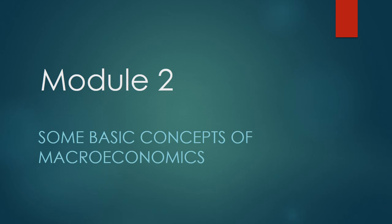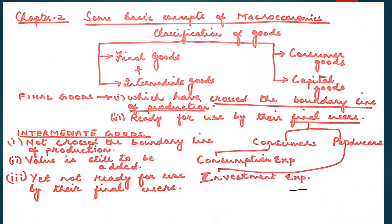Good morning children. This is module 2, which deals with some basic concepts of macroeconomics, an integral part of the topic national income and its related aggregates. This particular chapter, chapter 2, deals with the classification of goods into final goods and intermediate goods, and consumer goods and capital goods.